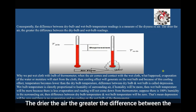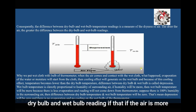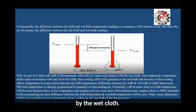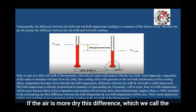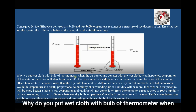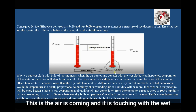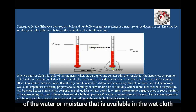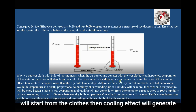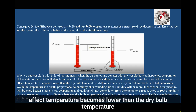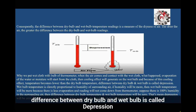The difference between the dry bulb and wet bulb temperature readings is the measure of dryness of air — the drier the air, the greater the difference. This difference is called the depression. When air contacts the wet cloth, evaporation of moisture from the cloth starts, generating a cooling effect on the wet bulb. Because of this cooling effect, the temperature becomes lower than the dry bulb temperature.